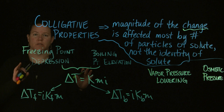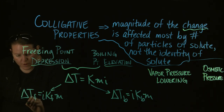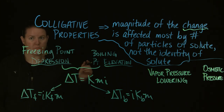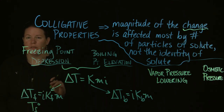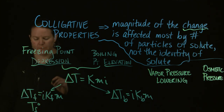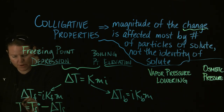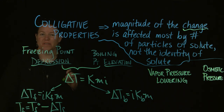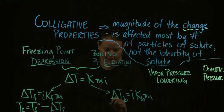The big difference between these two is what you do with the change. That's where the words 'depression' and 'elevation' come in. When talking about the change, we're either going to subtract it from the pure solvent's freezing point, or we're going to add it to the pure solvent's boiling point.